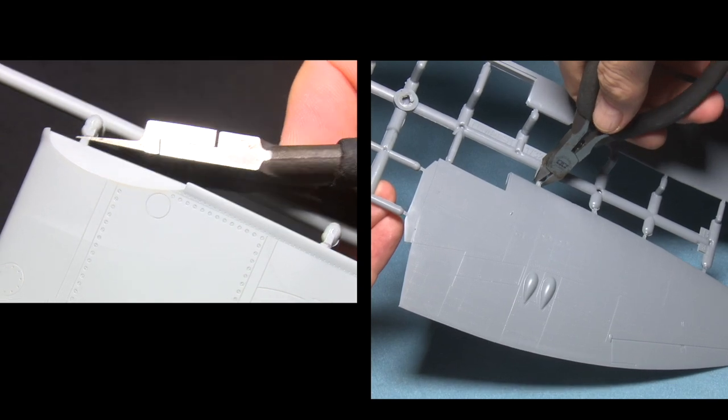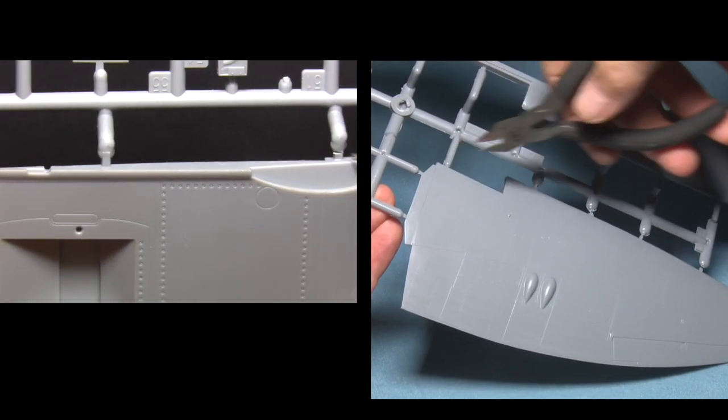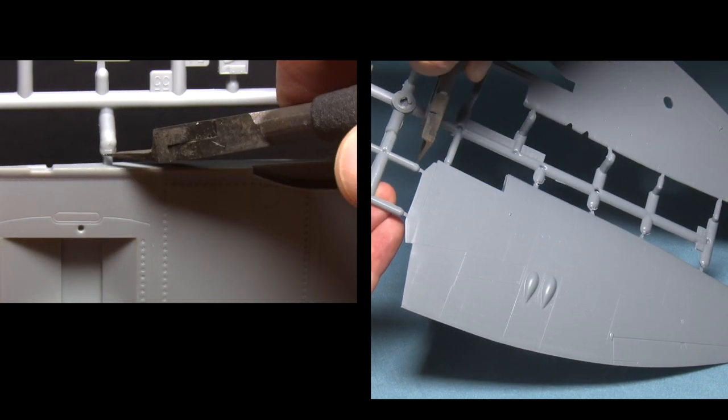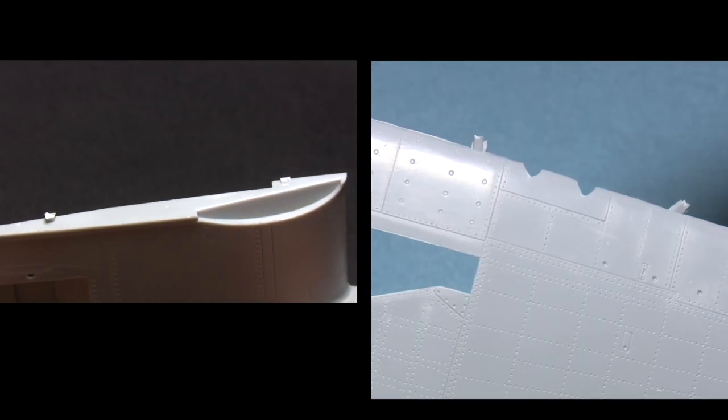When removing the parts, cut about 3-4 millimeters above the part, and then once the part has been removed from the sprue, cut it again, but still leaving a little bit of a stub of about 1 millimeter or so.